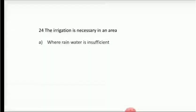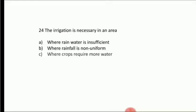The irrigation is necessary in an area — Option A: where rainwater is insufficient, Option B: where rainfall is non-uniform, Option C: where crops require more water, Option D: all of these. Answer is Option D, all of these. Where rainwater is insufficient we need artificial water supply; where rainfall is non-uniform we store water; and where crops like rice and wheat require more water, we do irrigation.